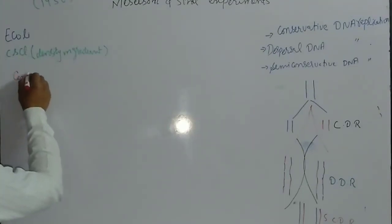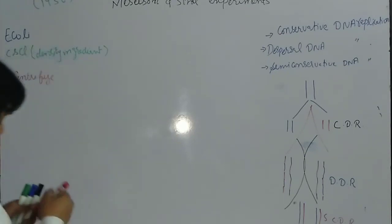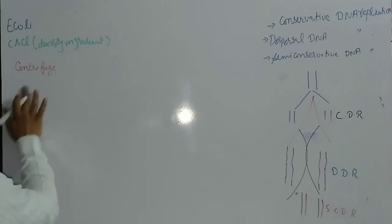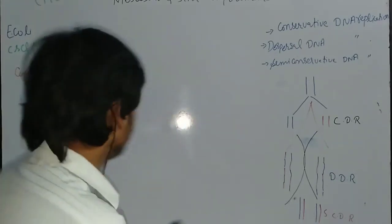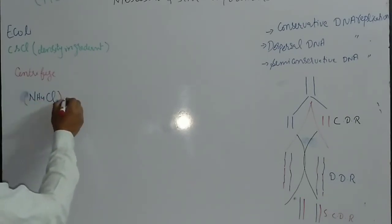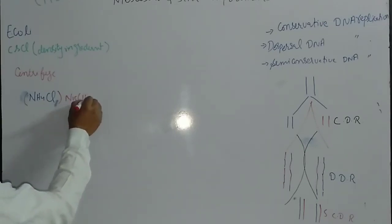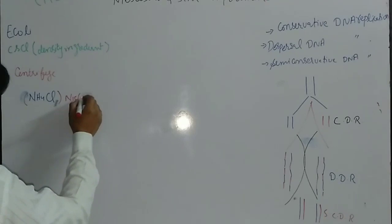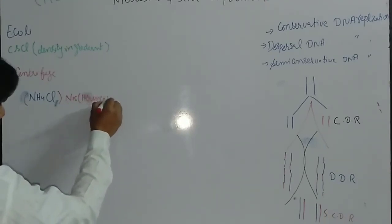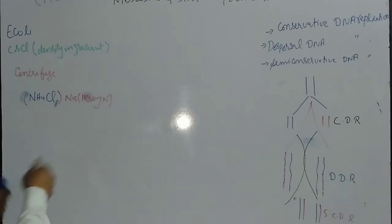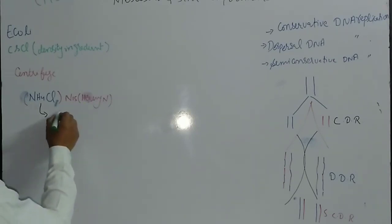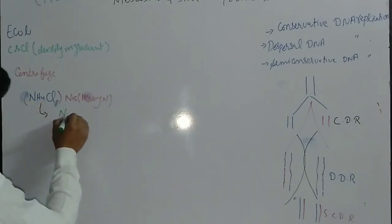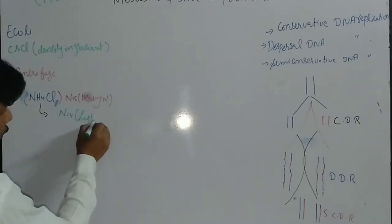Moreover, they used two types of media. They used ammonium chloride. In the first stage they took ammonium chloride with N15, which is actually heavy nitrogen. Then they took this ammonium chloride a second time with N14, which is actually light nitrogen or normal nitrogen.